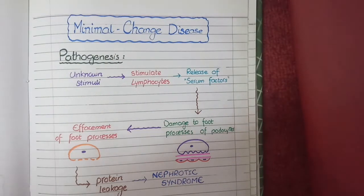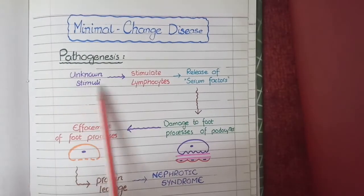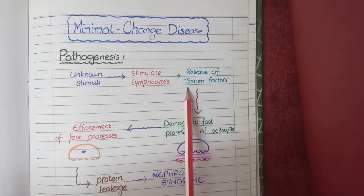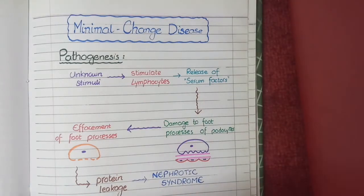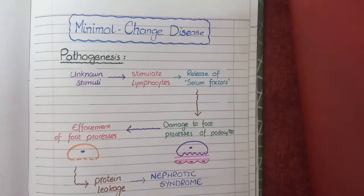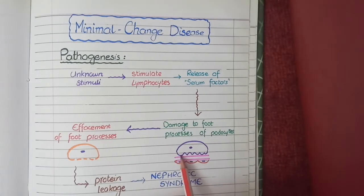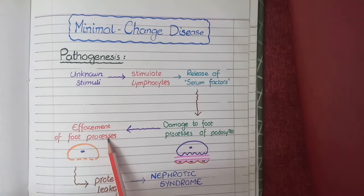Moving to the pathogenesis: minimal change disease begins when some unknown stimuli activate lymphocytes to release special cytokines or inflammatory mediators called serum factors. These circulating serum factors reach the glomerulus and cause damage to the foot processes of podocytes. This damage results in flattening of the foot processes, known as effacement of foot processes.